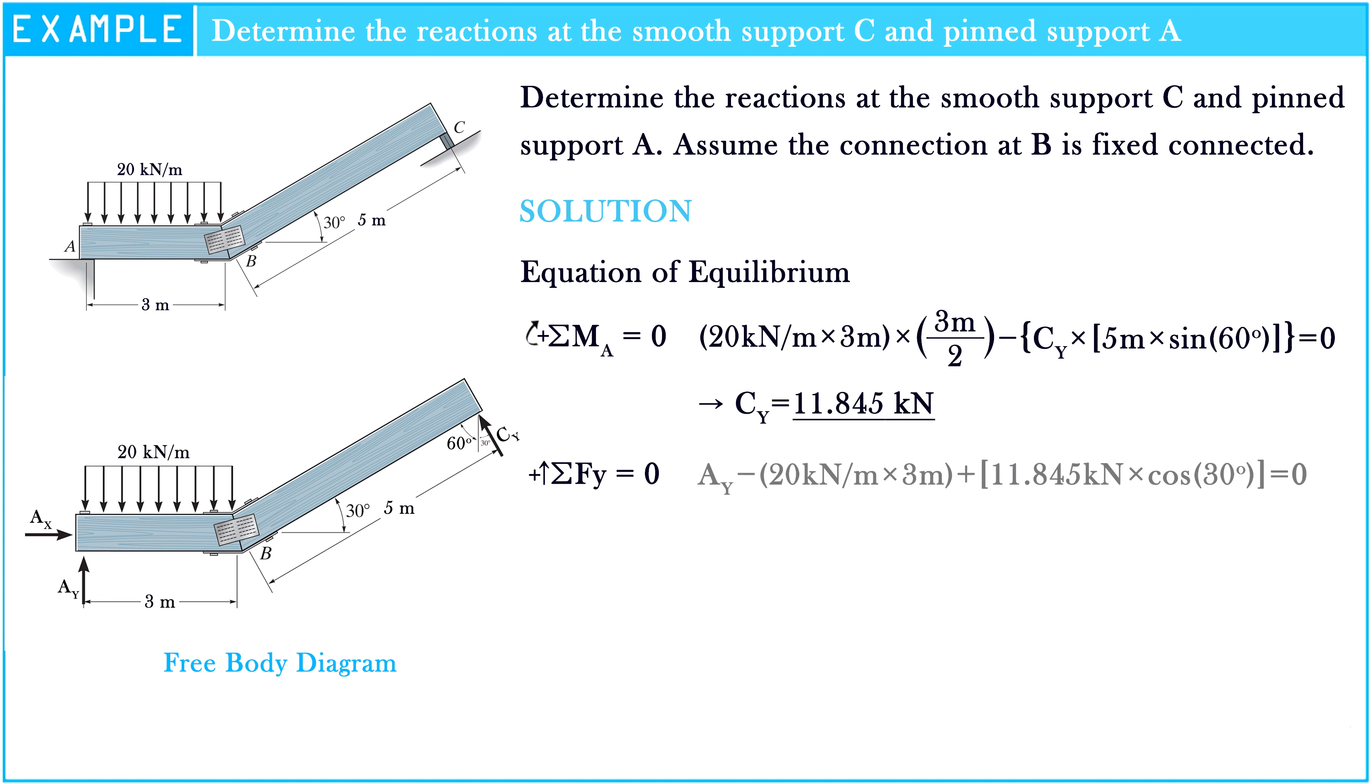The sum of forces along the Y axis equals zero. So AY minus 20 kN per meter multiplied by 3 meters plus 11.845 kN multiplied by cos 30 degrees equals zero.